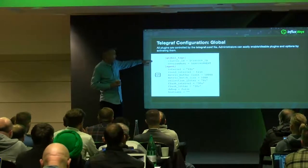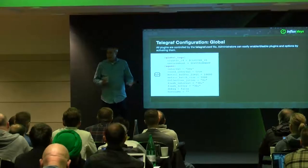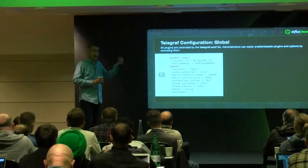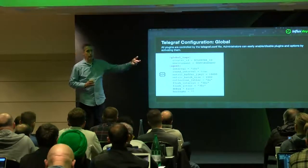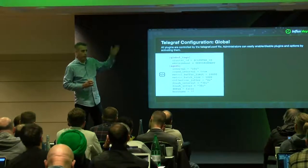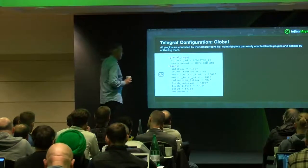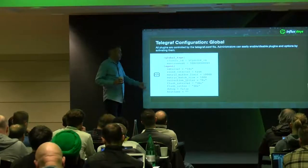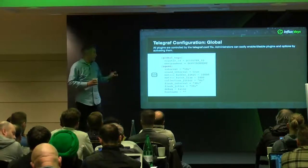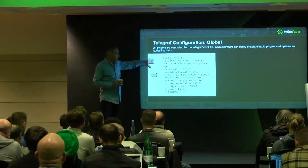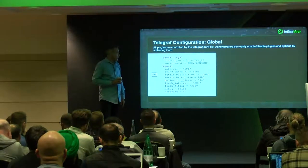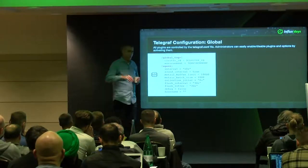We also have an environment tag — acceptance, production. Every cluster is 'prod-dash-your first eight digits,' your region, and then host type: meta, data, coach, etc., with an ordinal ID one through six — could be larger if you have a larger data node deployment or a Grafana node. All of that information is captured using global tags, and then we set the various collection intervals for the rest of the stats to be reported back to InfluxDB.